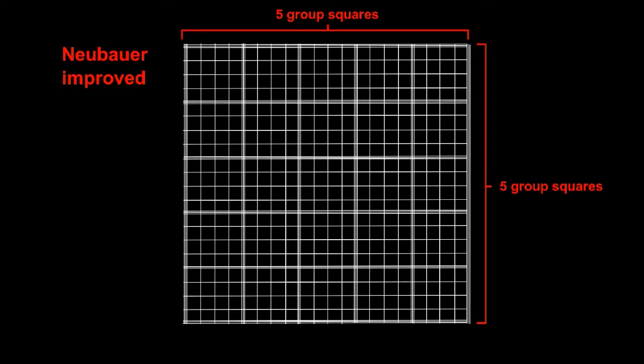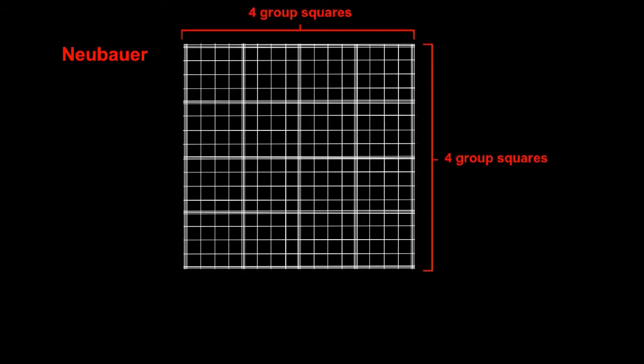In the Neubauer-Improved chamber the large square consists of 25 group squares. In the older Neubauer chambers the large square consists of only 16 group squares. Each of these group squares is further subdivided into 16 areas or mini squares. The mini squares are there to help you keep track of counted cells and to establish a counting order.